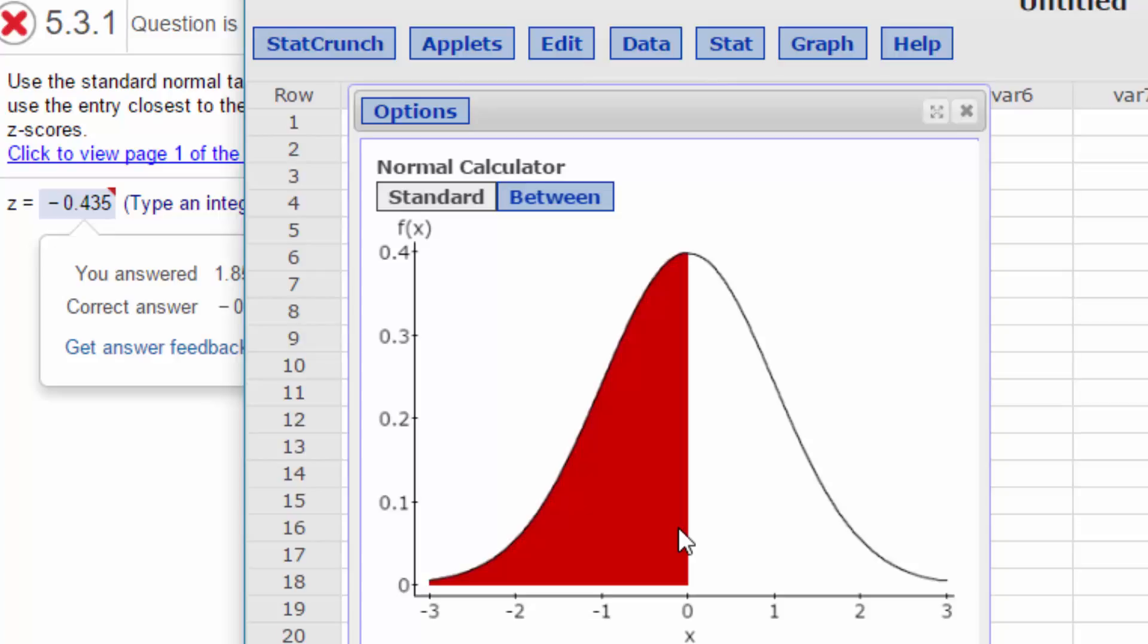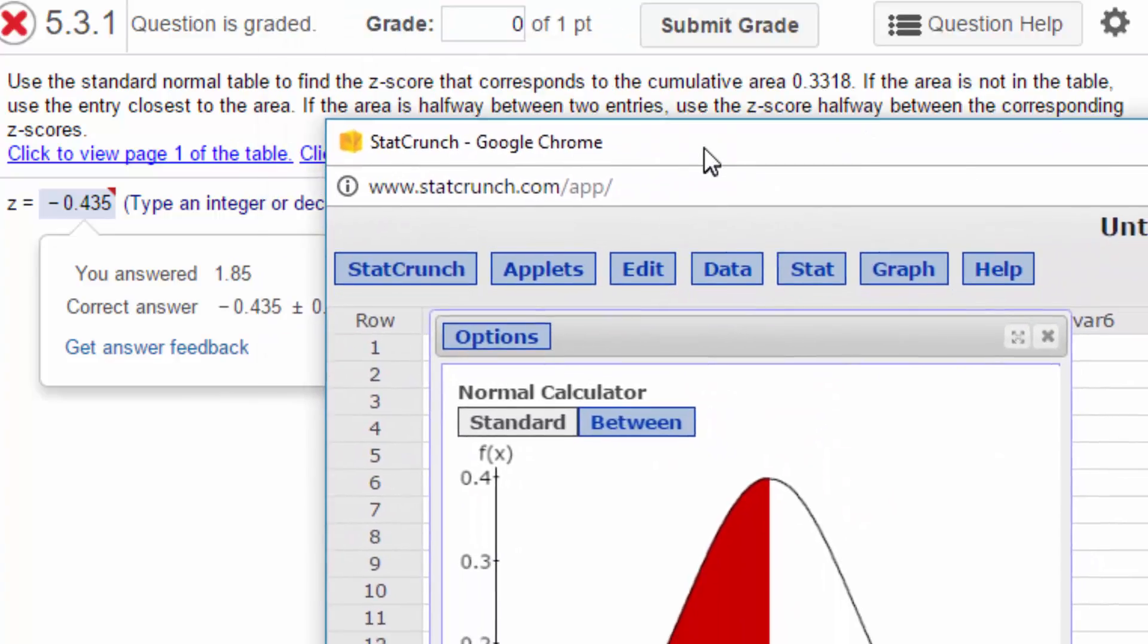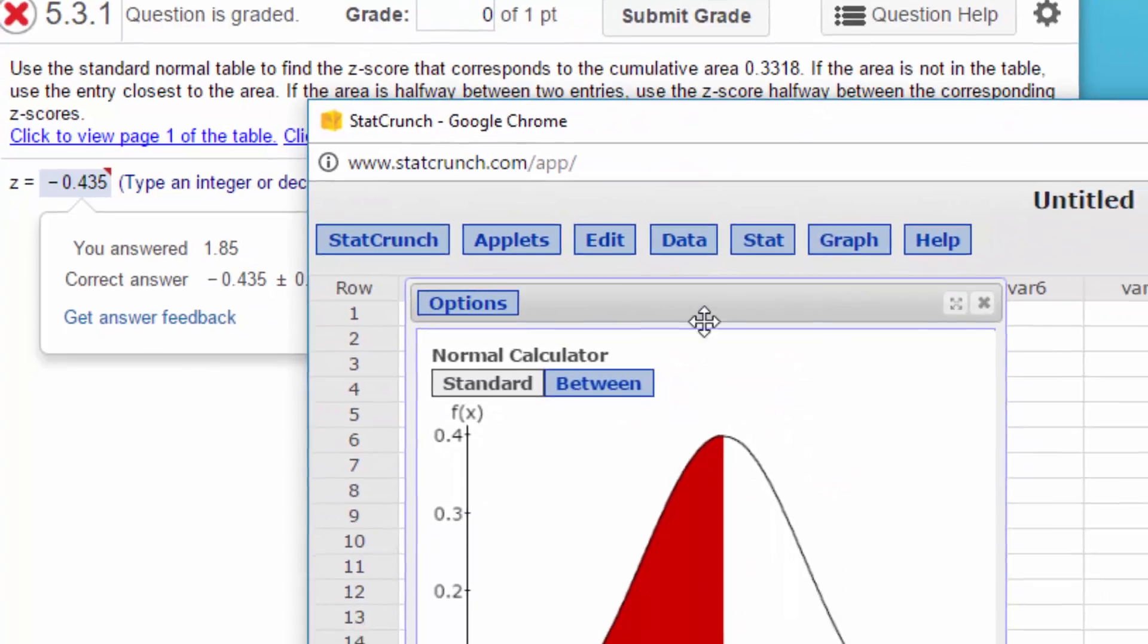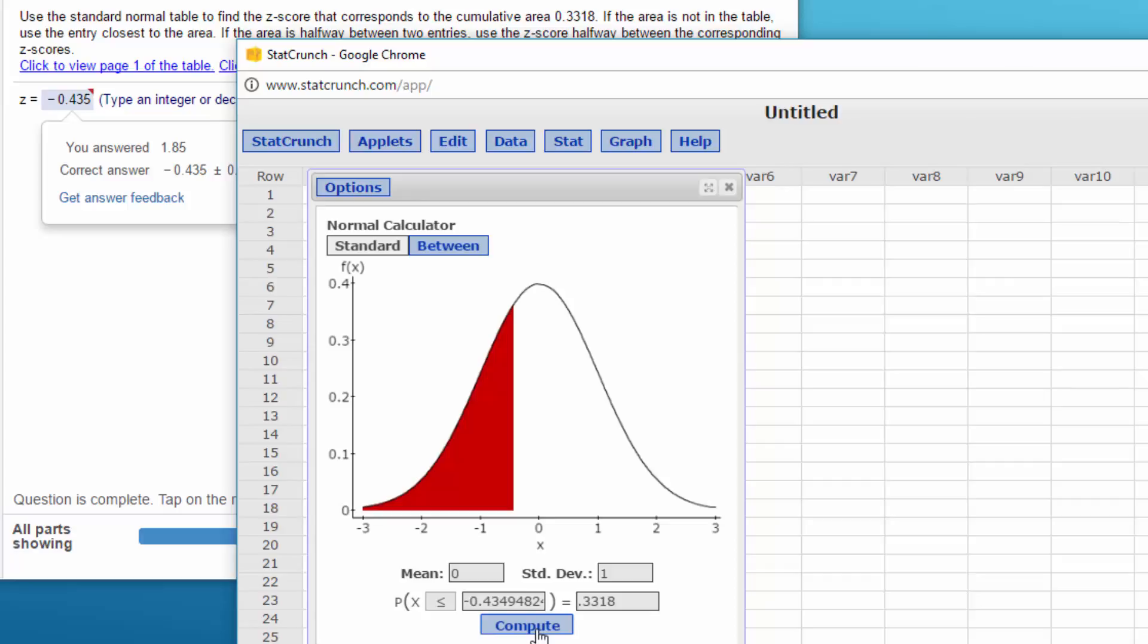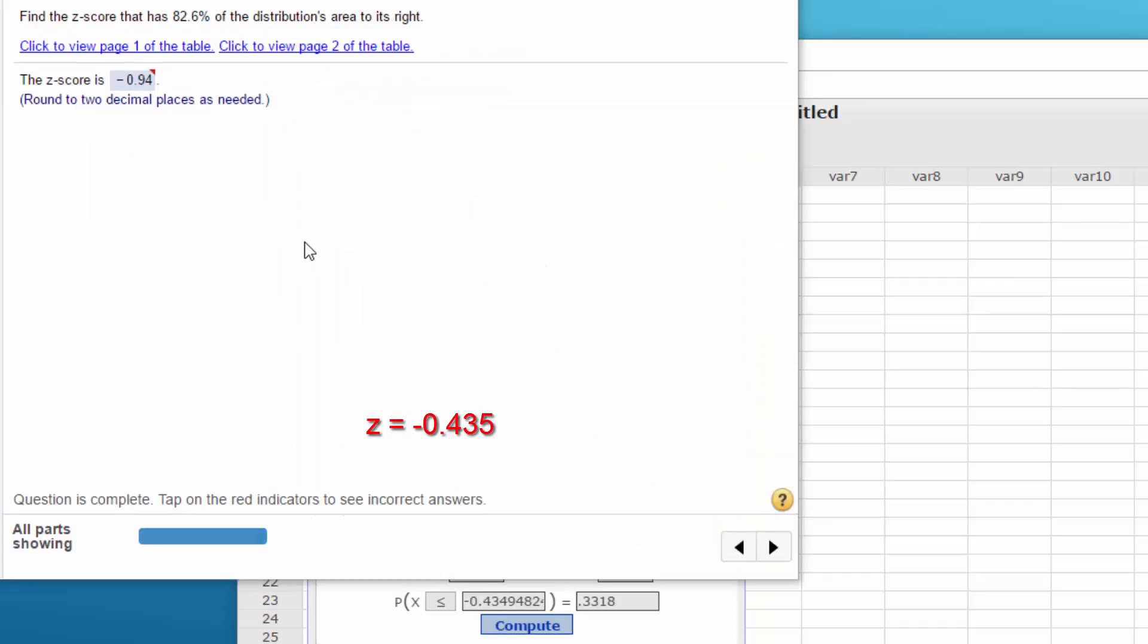So let's go ahead and find the answer for this. The area is 0.3318. I'll put that in that side and we want less than, again, because we want everything from the left tail to the z-score. So the z-score that we're interested in is -0.435 on that first one.